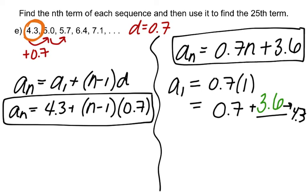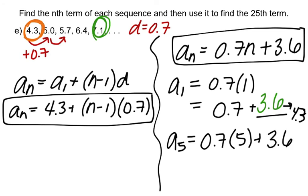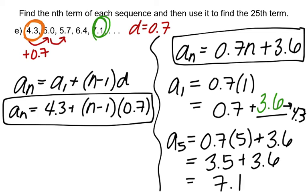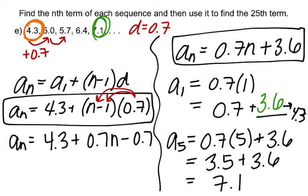It's always a good idea to test the formula. Pick another term — the last one is 7.1, which is the 5th term. Testing a sub 5: 0.7 times 5 plus 3.6 is 3.5 plus 3.6, which is 7.1. That's exactly what we wanted, so our formula works. On the formula side, if you distribute, you get 0.7n minus 0.7, and 4.3 minus 0.7 indeed leaves 3.6 — the same simplified form.